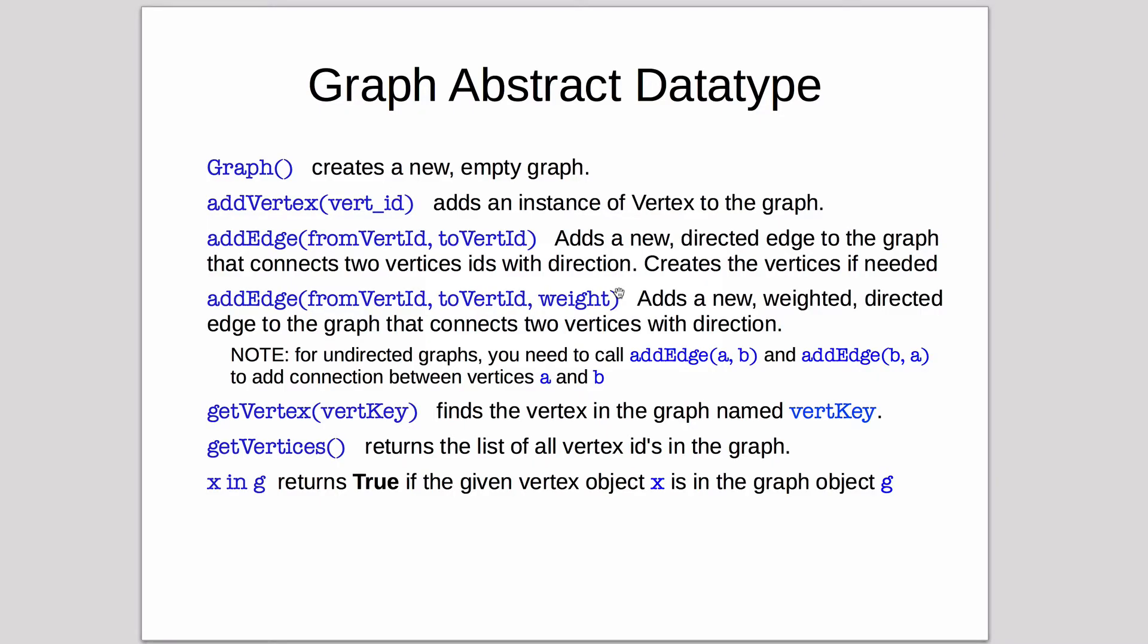Now let's look at the graph abstract data type, or ADT. We're going to have a class called Graph, and we'll cover that first. Graph will be the main class that a user will interact with.